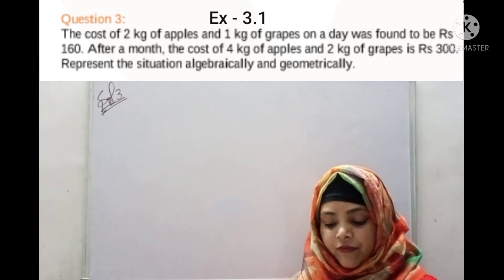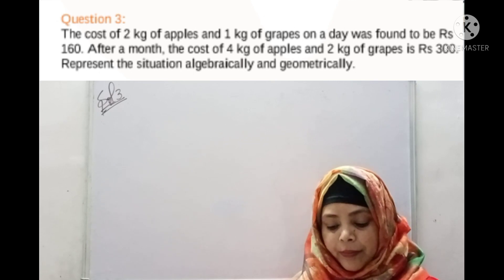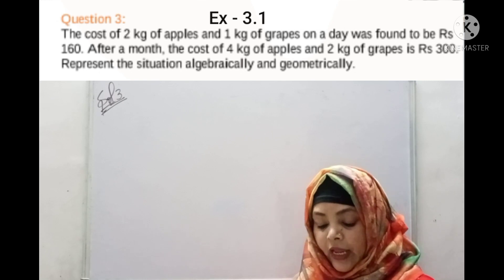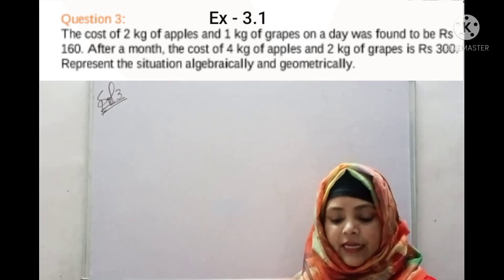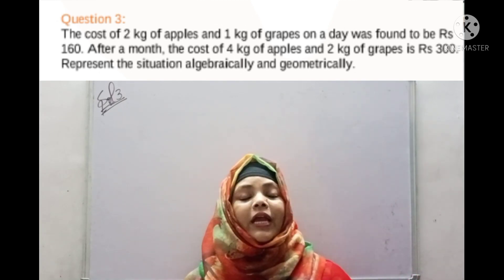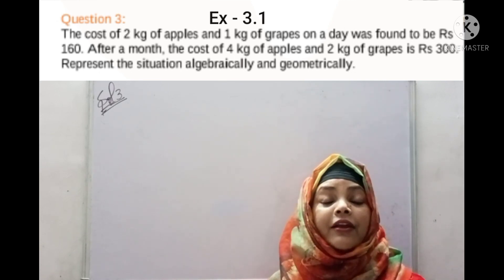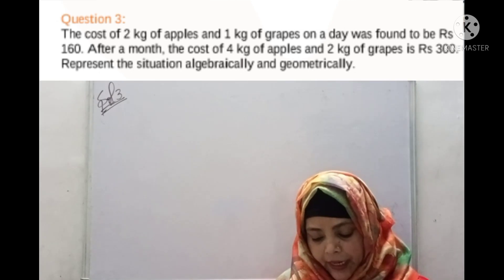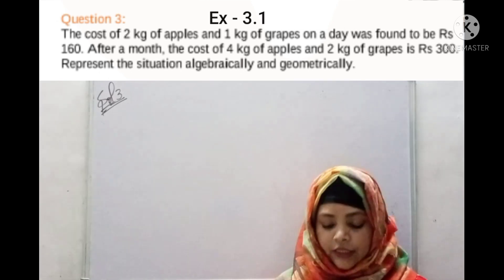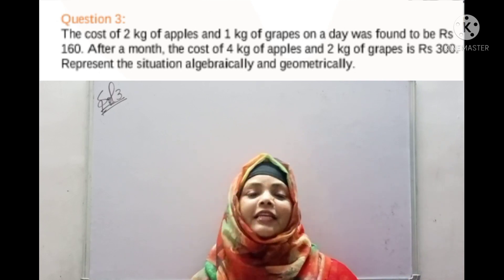The cost of 2 kg of apples and 1 kg of grapes on a day was found to be Rs.160. After a month, the cost of 4 kg of apples and 2 kg of grapes is Rs.300. We will represent this graphically and algebraically.